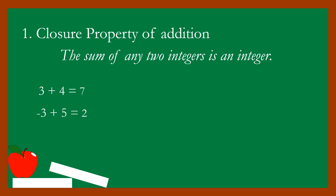Next example: negative three plus five is equal to two. Negative three and five are both integers, so the result is also an integer. Next, negative four plus negative five is equal to negative nine — both are integers, therefore the result is also an integer.